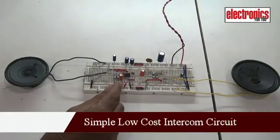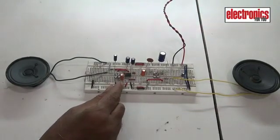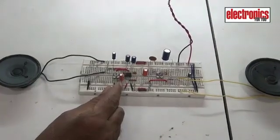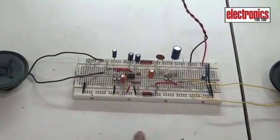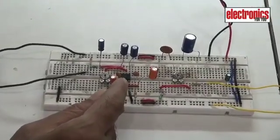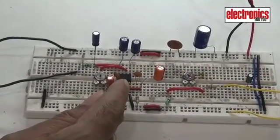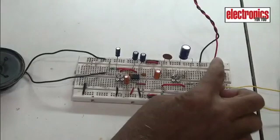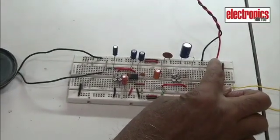This is a simple low-cost intercom circuit. The circuit is based on TDA2822M Low Voltage Audio Amplifier IC. It is powered by a 6 volt battery or any 6 volt DC supply.